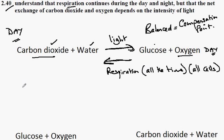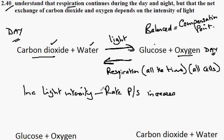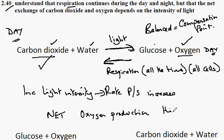If we increase light intensity during the day, then the rate of photosynthesis increases. So the rate at which we use up carbon dioxide will greatly increase, and the rate of production of oxygen will increase. The net effect would be oxygen production when there is high light intensity.